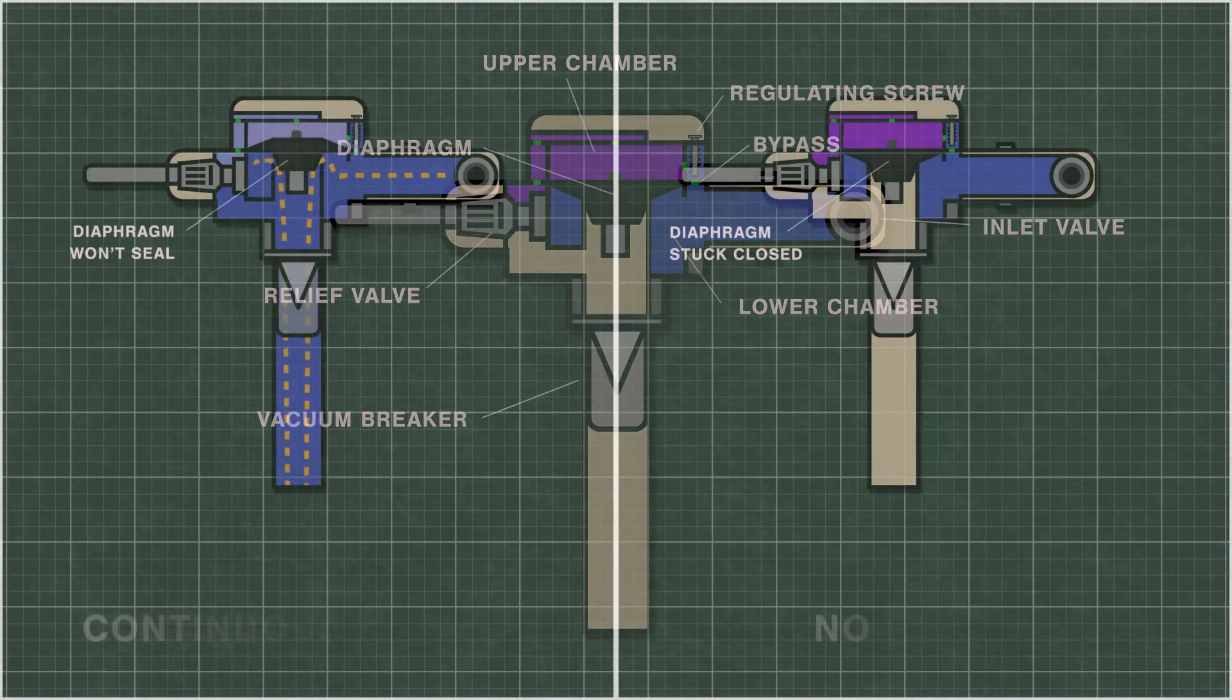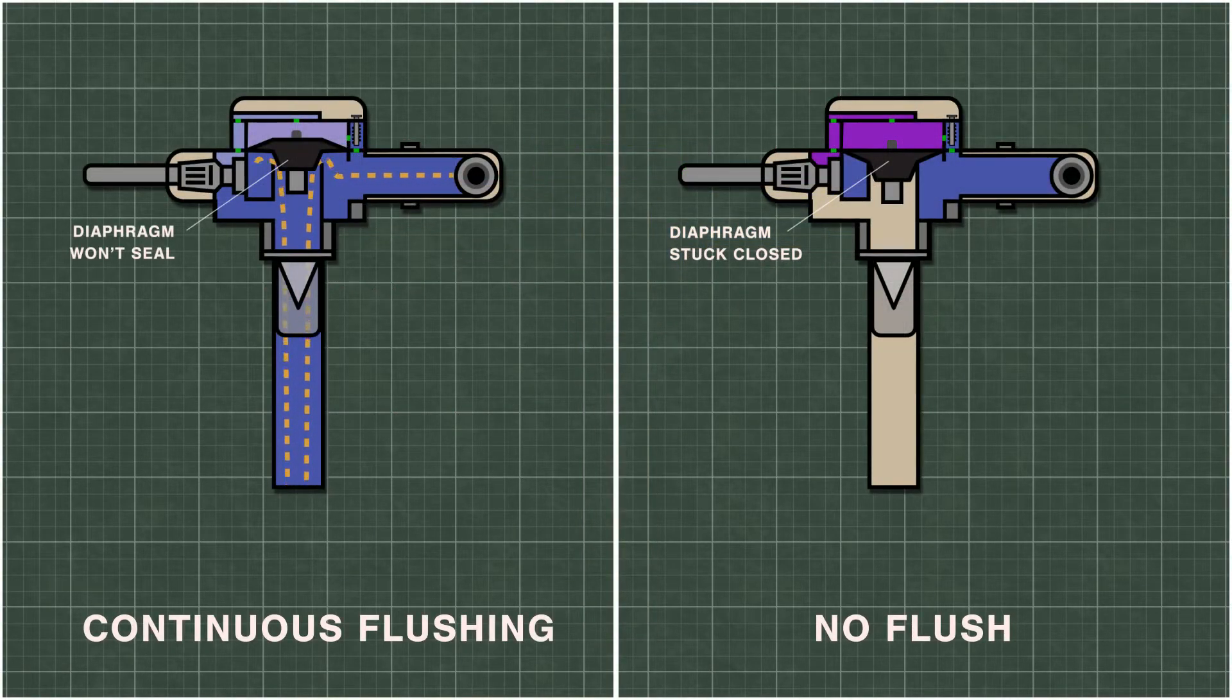If the diaphragm wears down, it can cause continuous flushing if it fails to seal properly on the valve. Alternatively, if the diaphragm sticks to the valve, it can prevent the unit from flushing any water.